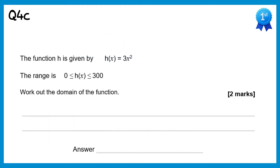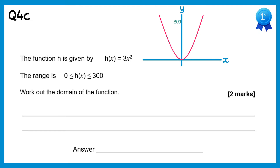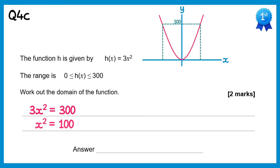For this question I'll draw a sketch of the graph 3x squared. We've been told the range goes from 0 to 300, so we need to find the domain — what input values give 300 as an output. Setting 3x squared equal to 300, dividing by 3 gives x squared equals 100, and square rooting gives x equals plus or minus 10. So the domain is x between negative 10 and 10, using less than or equal to signs because 300 is included in the range.